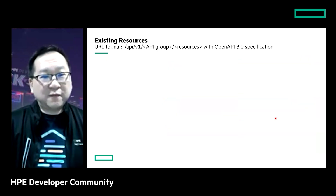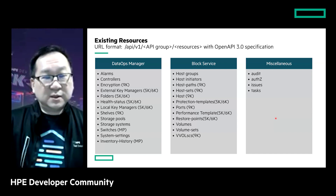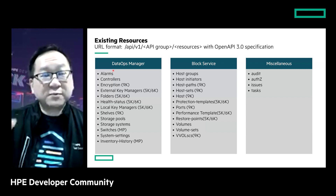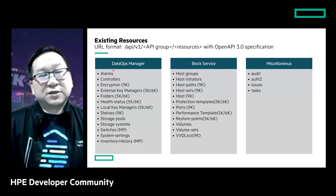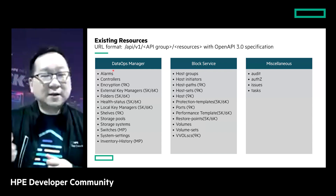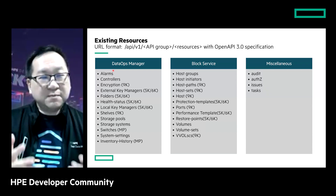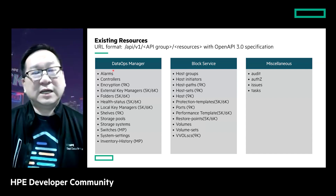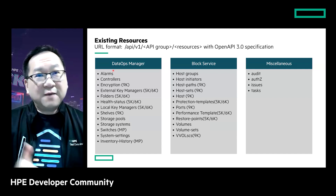Three API resource groups are available. The first is DataOps Manager, corresponding to the DataOps Manager service in the Data Services Cloud Console — used to manage storage arrays including Electra 6000, 9000, and 5000 MP, controlling settings and discovering information like shells, disks, and storage pool configurations. The second is block services, dealing with provisioning storage volumes consumed by hosts. The third is miscellaneous, dealing with environment configurations and settings.